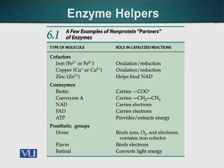Prosthetic groups. Examples of prosthetic groups include heme, which binds iron and oxygen — found in our red blood cells — and can also carry electrons. Flavin and retinal are also examples of prosthetic groups. Retinal can convert light energy; it is a type of prosthetic group that allows us to see.